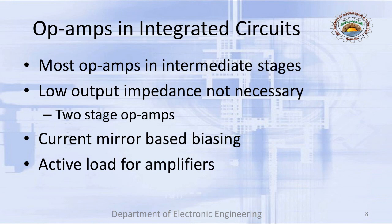Since these on-chip op-amps are not driving a large external load, it is not necessarily required to have a low output impedance. Hence, for integrated circuit design, the operational amplifier design task is primarily reduced to two stages: the differential stage and the gain stage. This becomes less complex, but there are other stringent requirements arising from the need to fit everything into a very small chip real estate, which puts major pressure on the designer. The two major concerns for us will be current mirror-based biasing and active loading of amplifiers.